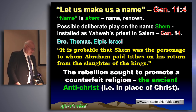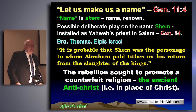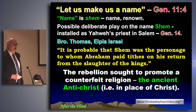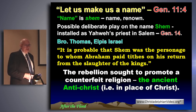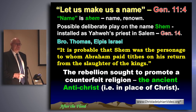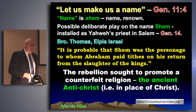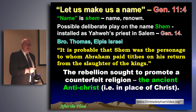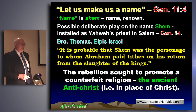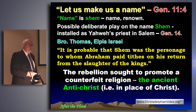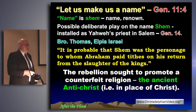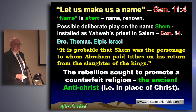This rebellion of Nimrod and his company sought to promote a counterfeit religion — the ancient Antichrist. Antichrist means 'in the place of Christ' or 'instead of Christ.' Nimrod set out to replace God; he became the first God-king on earth, and therefore the first Pope. I'm going to throw at you a mountain of quotations so that you can see this doesn't come out of my little brain — it comes out of history, and you're going to see its relationship to the Word of God.